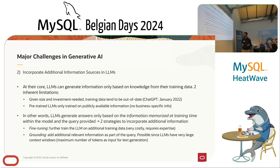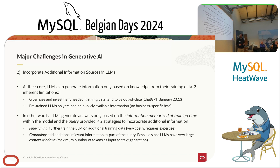The other inherent limitation is that pre-trained LLMs are only trained on publicly available information from the internet. It is certainly not trained on your business data, but you might want to actually get an answer from that. LLMs can only generate answers from two sources of data: the information memorized at training time within the model, and the information in the query that you are providing.